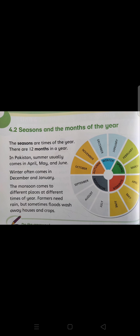Now, topic 4.2 — Seasons and the Months of the Year. The seasons are the times of the year, and there are 12 months in a year. Their names are: January, February, March, April, May, June, July, August, September, October, November, and December. In Pakistan, summer usually comes in April, May, and June.